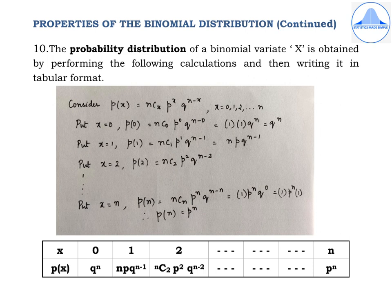Form a table with x values 0, 1, 2 up to n in the first row and the corresponding probabilities Q^n, nPQ^(n−1), nC2·P²·Q^(n−2), and so on up to P^n in the second row.